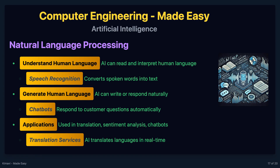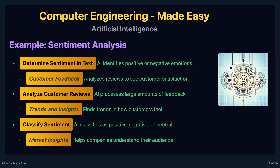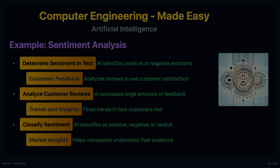AI is used in natural language processing, or NLP, to enable machines to understand and generate human language. Applications include language translation, sentiment analysis, and chatbots. Sentiment analysis is the process of determining the sentiment or emotion expressed in a piece of text — for example, analyzing customer reviews to determine whether they are positive, negative, or neutral. Machine learning models can be trained on labeled datasets to classify the sentiment of new text data.